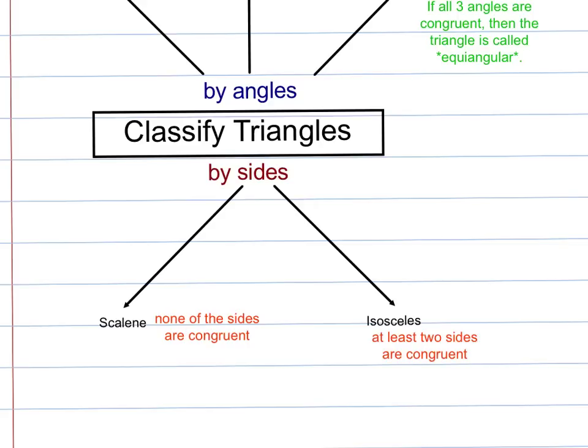In an isosceles triangle, at least two of the sides are congruent. Since there are three sides in a triangle, if all three sides are congruent, we have a special name for that.